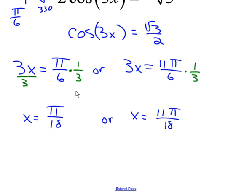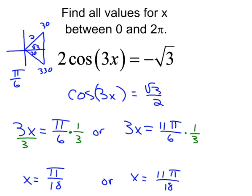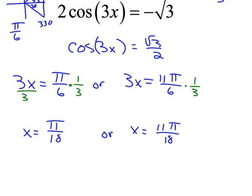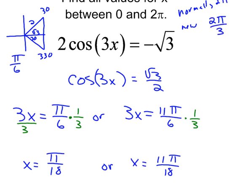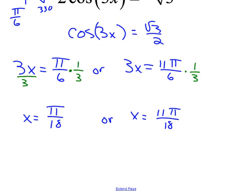So there we go. Now I have to think about, are there more answers? And so I'm back to thinking about my period. What is my period? My period, cosines period, is normally 2 pi. My new period is going to be 2 pi divided by 3. So what that tells me is, if pi over 18 is an answer, there's another solution, 2 pi over 3 above, or 2 pi over 3 below.